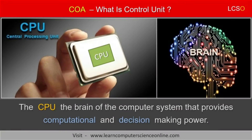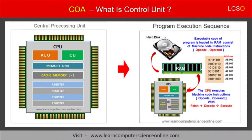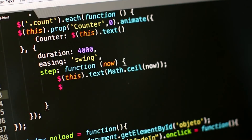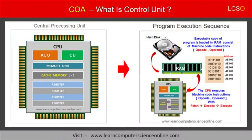The microprocessor is said to be the brain of the computer system. It is the processor that provides the processing power to the computer. In computer architecture, the microprocessor is responsible to perform two main functions: program execution is the first function of the CPU, and controlling the operations of the computer system is the second important function of the CPU.